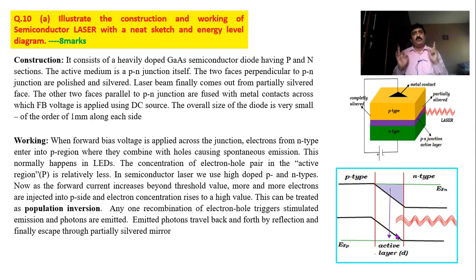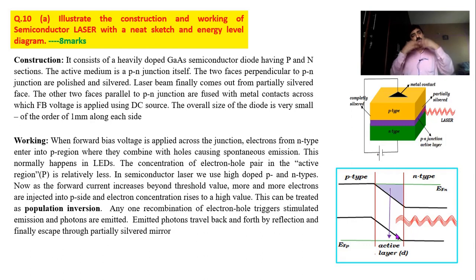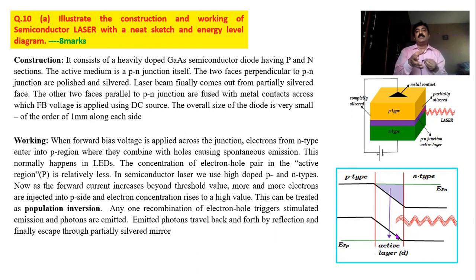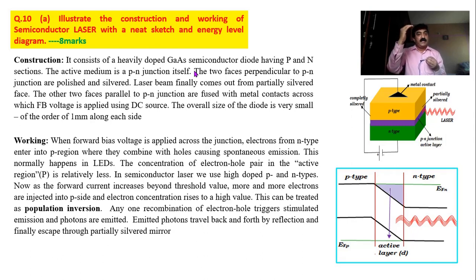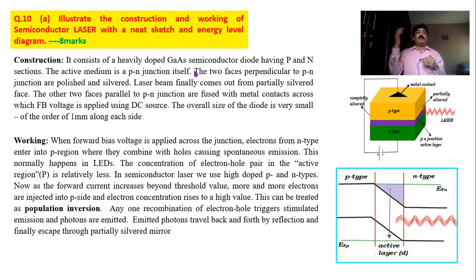In a laser, because we use a heavily doped semiconductor, more and more electrons are pushed in. If you increase the voltage, the number of electrons entering the junction increases again. In laser, what we ultimately want is more electrons in the excited state — that is called population inversion. You can increase the number of electrons more and more by increasing the voltage, or by increasing the doping concentration, or by doing both.